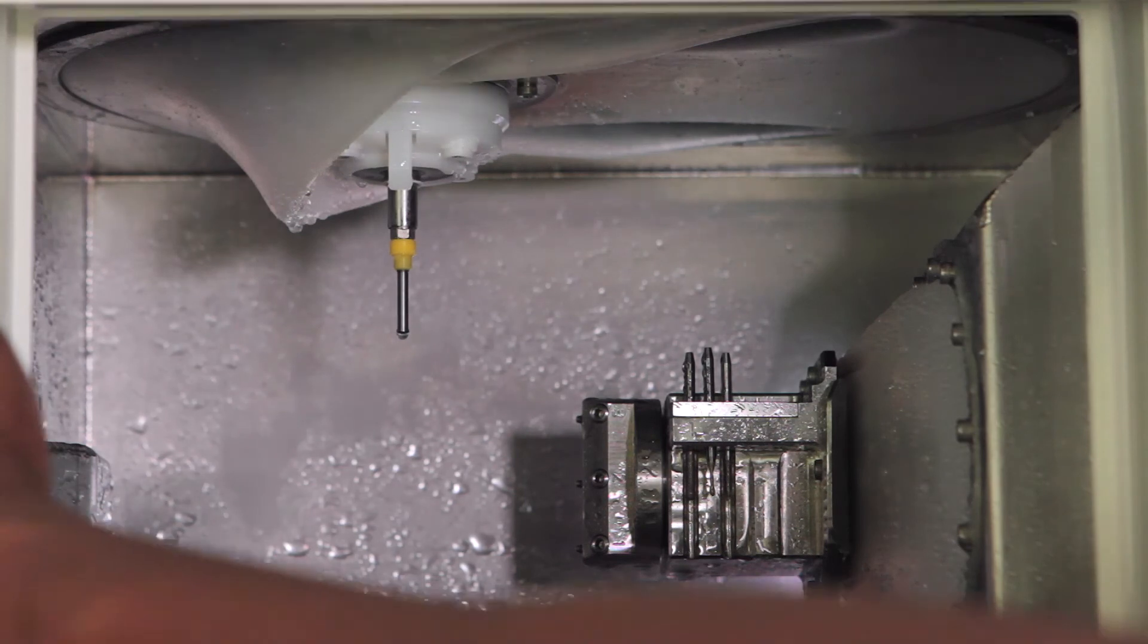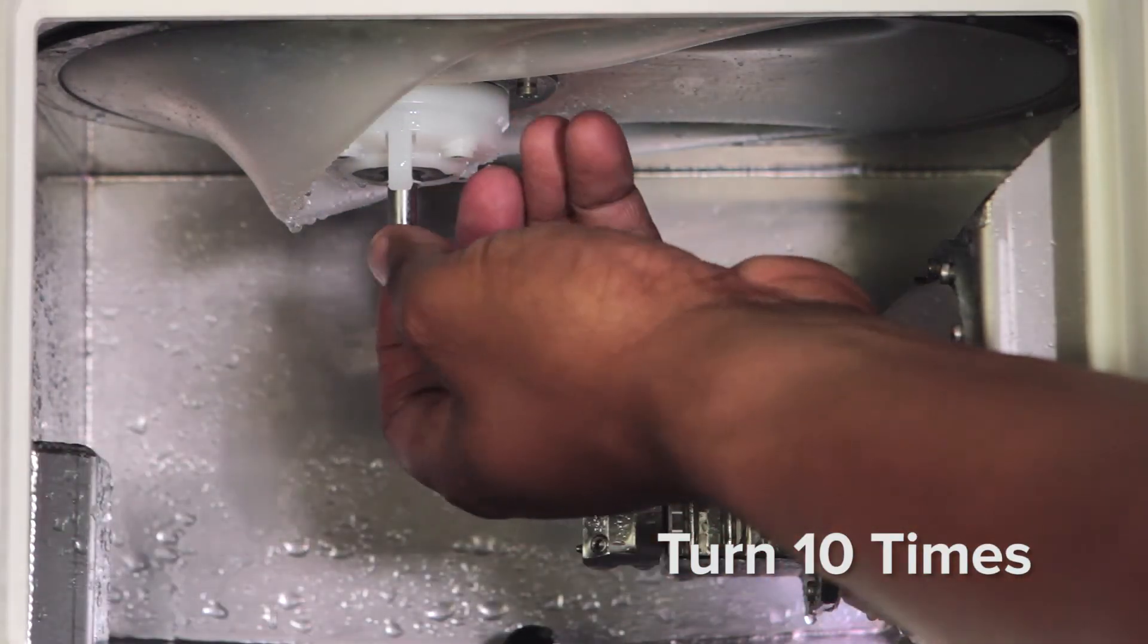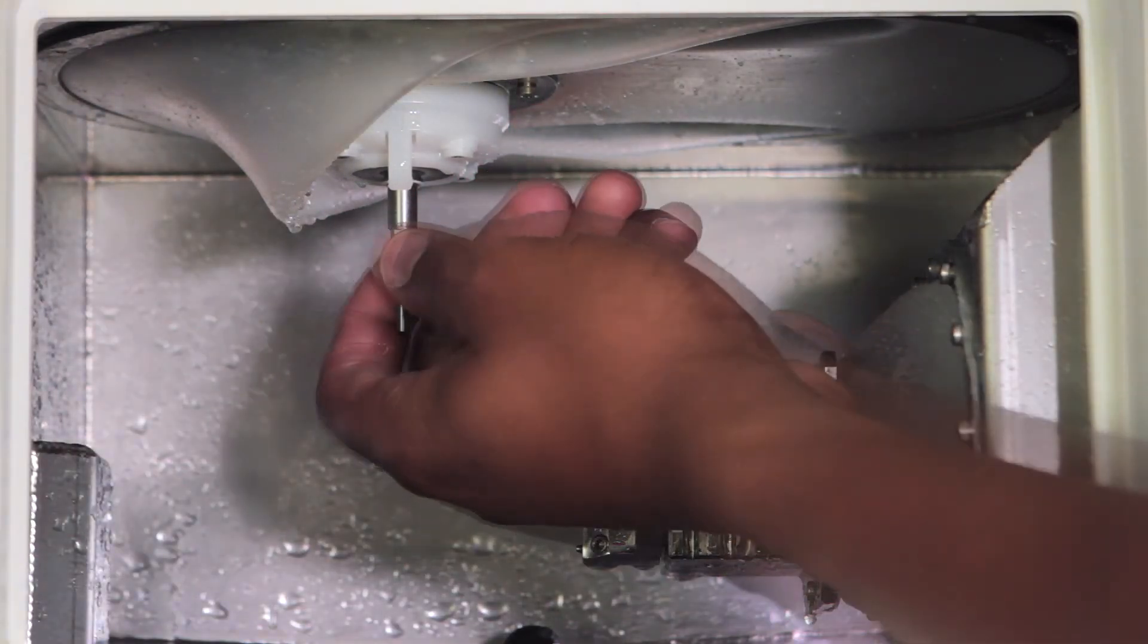Open the front cover and turn the spindle around ten times by hand in either direction, then close the front cover.